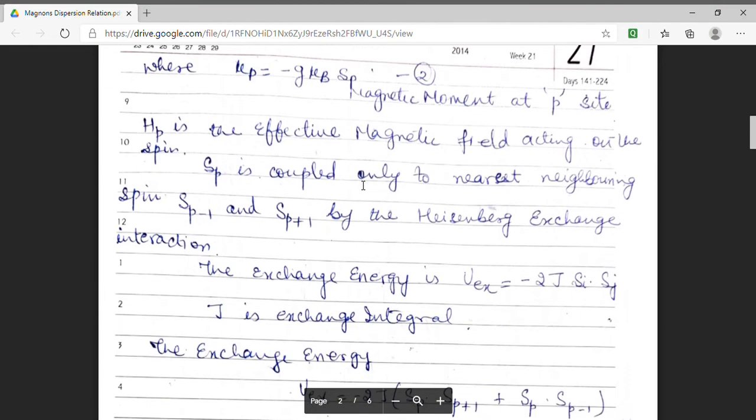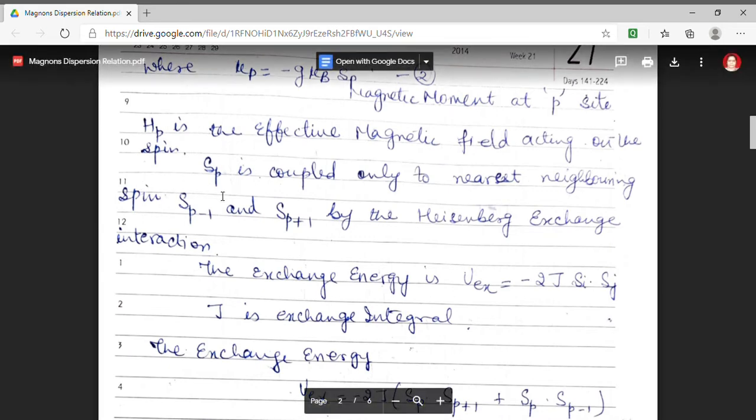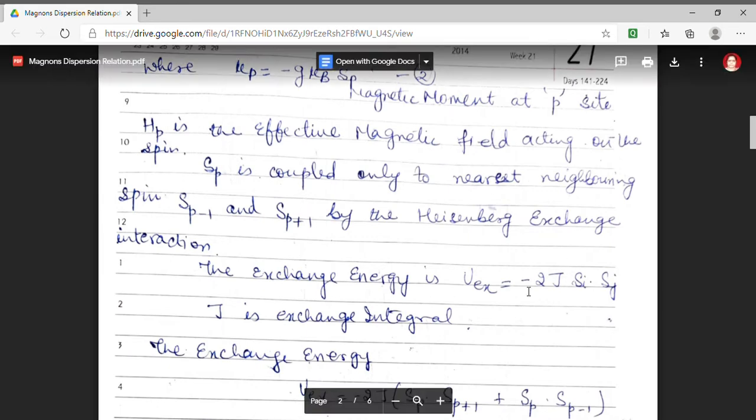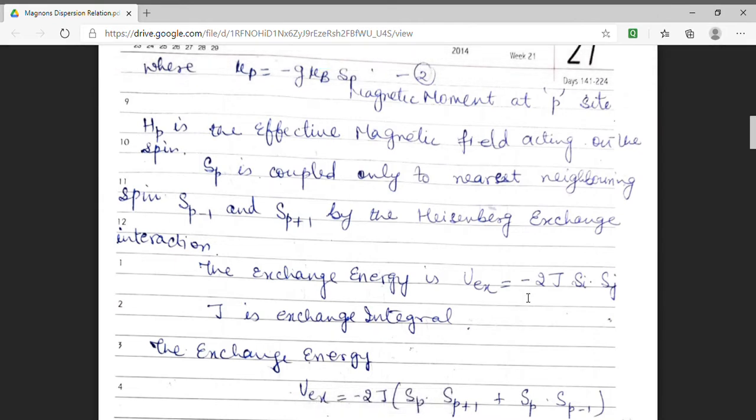So, I am only considering the nearest neighboring interaction. That means, I am considering that my spin at p site which is denoted by sp, it interacts with the spin sp minus 1 and sp plus 1. And this interaction is Heisenberg exchange interaction. And we know that the exchange energy in this condition will be minus 2j si dot sj.